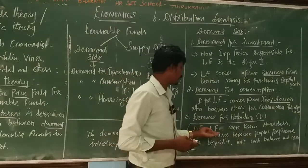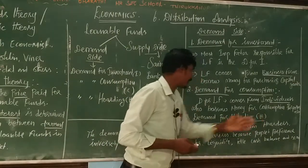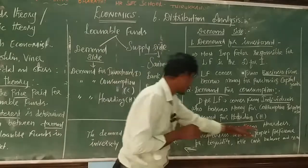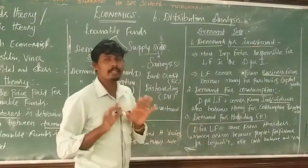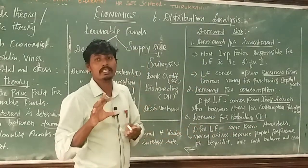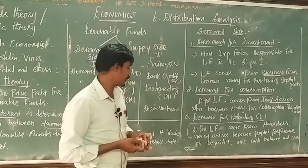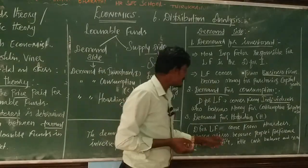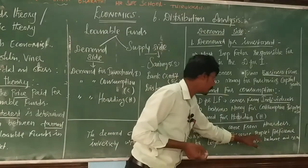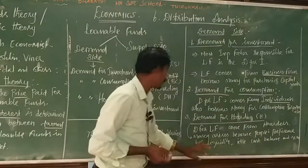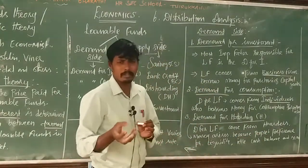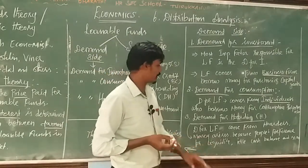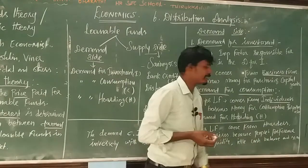The third category is demand for hoarding. The demand for loanable funds comes from owners. Money arises because of people's preference for liquidity — they prefer to hold idle cash balances.